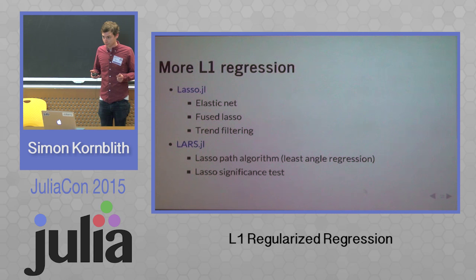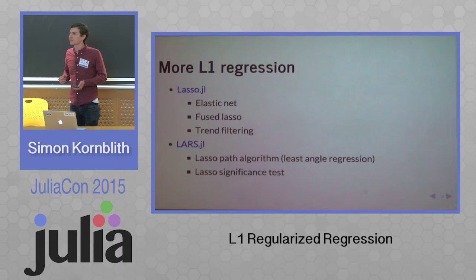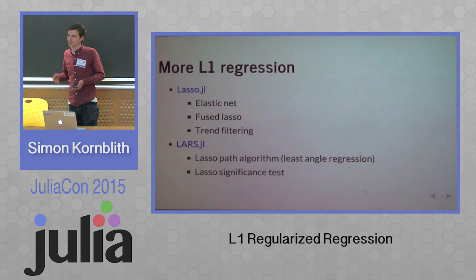Any questions? [Audience: Do you output the entire path or just for one parameter?] What's nice about lasso.jl is that you can warm start from the previous value. It outputs the whole path — I warm start through it. You could also fit a single lambda, but it's meant for the path.